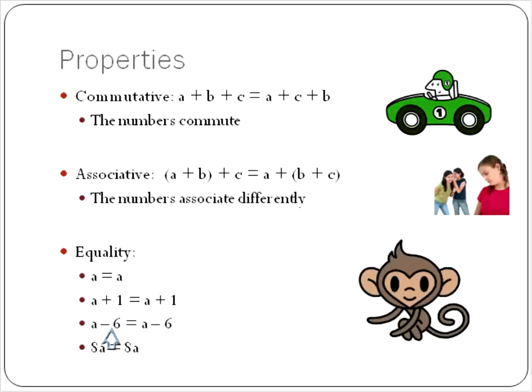You want to subtract six from this side? Go ahead. Just make sure to subtract six from that side. You want to multiply eight times A? Go for it. Just make sure to multiply eight times both sides of the equal sign. That's the property of equality. Whatever you do to one side, you do to the other.